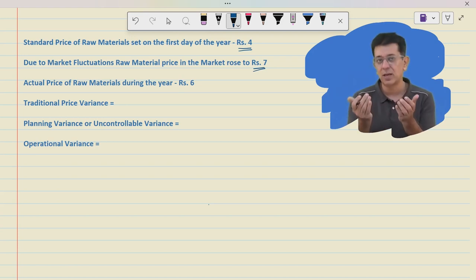This information I am giving you extra. Our purchase manager negotiated in a beautiful way with the suppliers and got the supplier who was closest to our factory. So transportation cost was also less and ultimately he managed to purchase raw material at the rate of rupees 6.